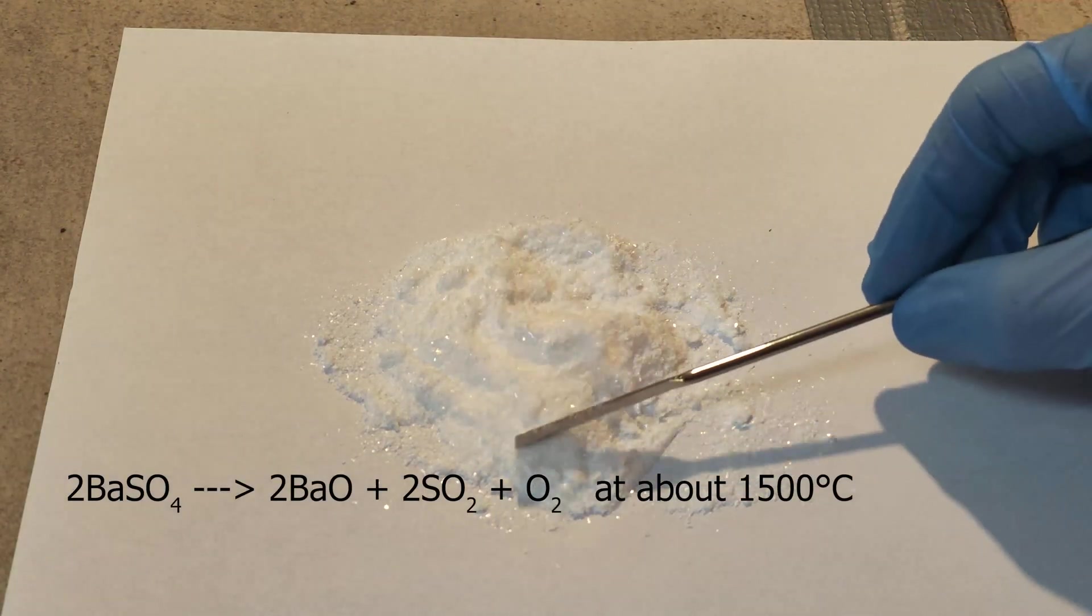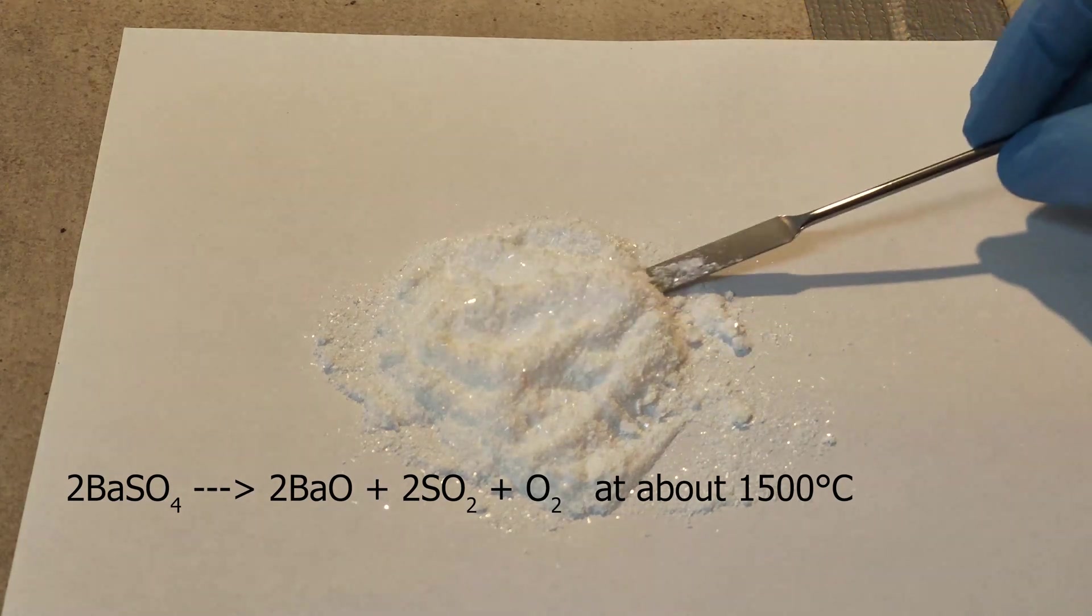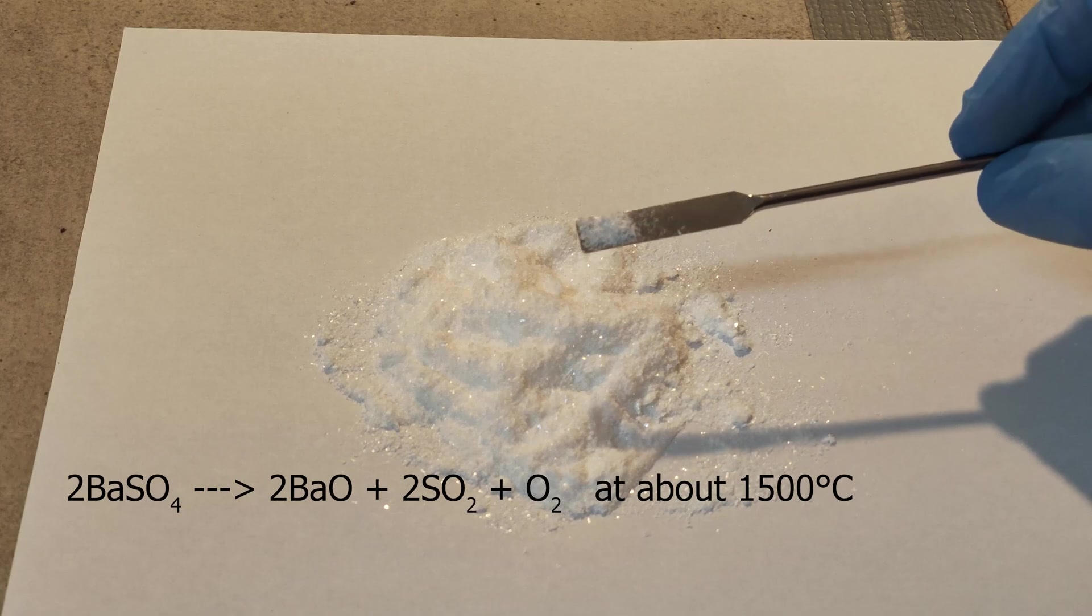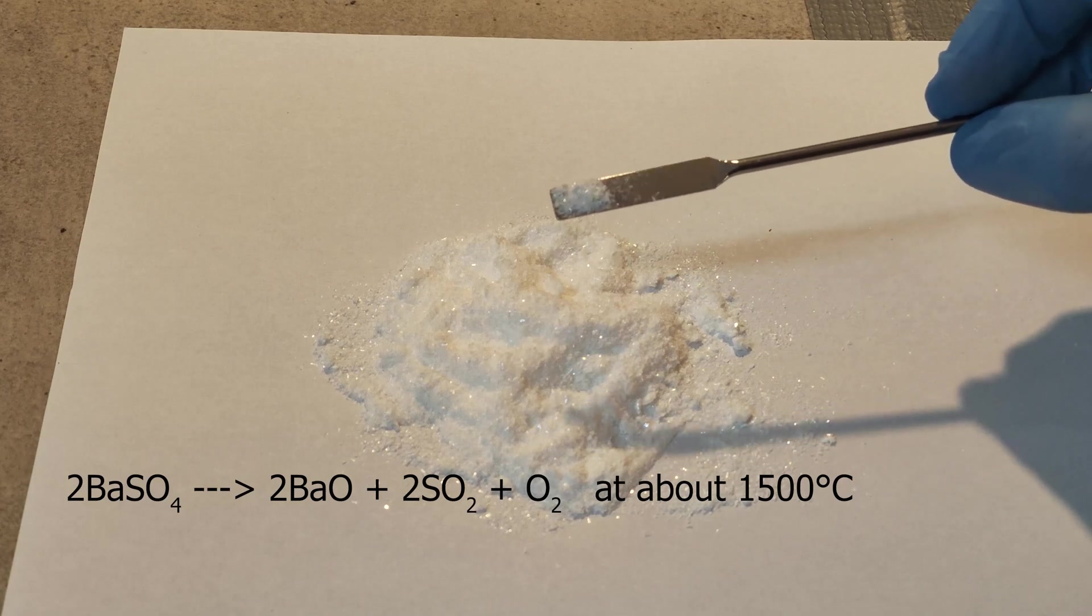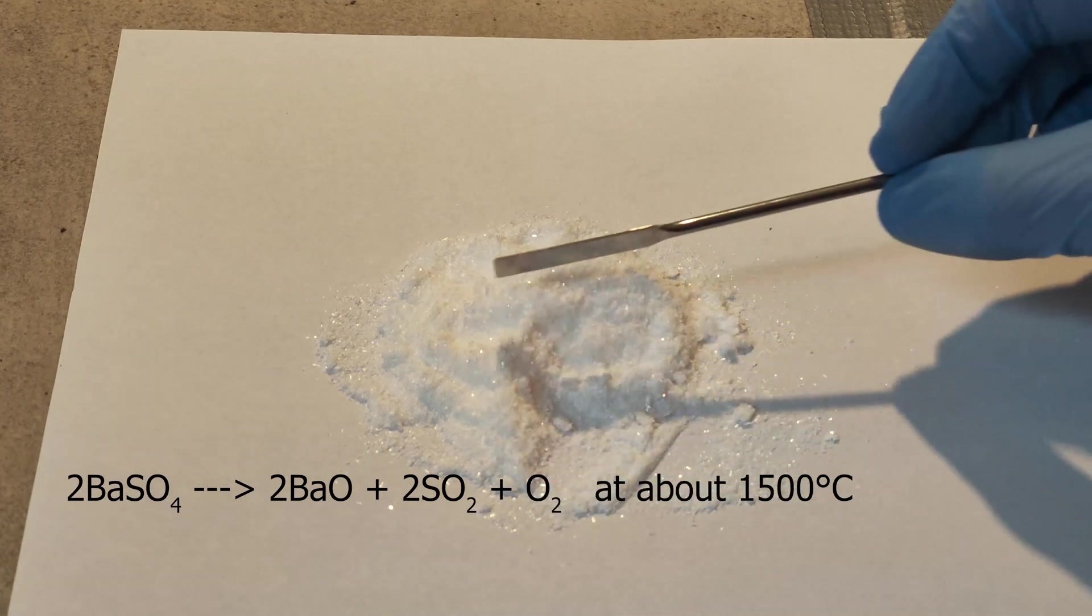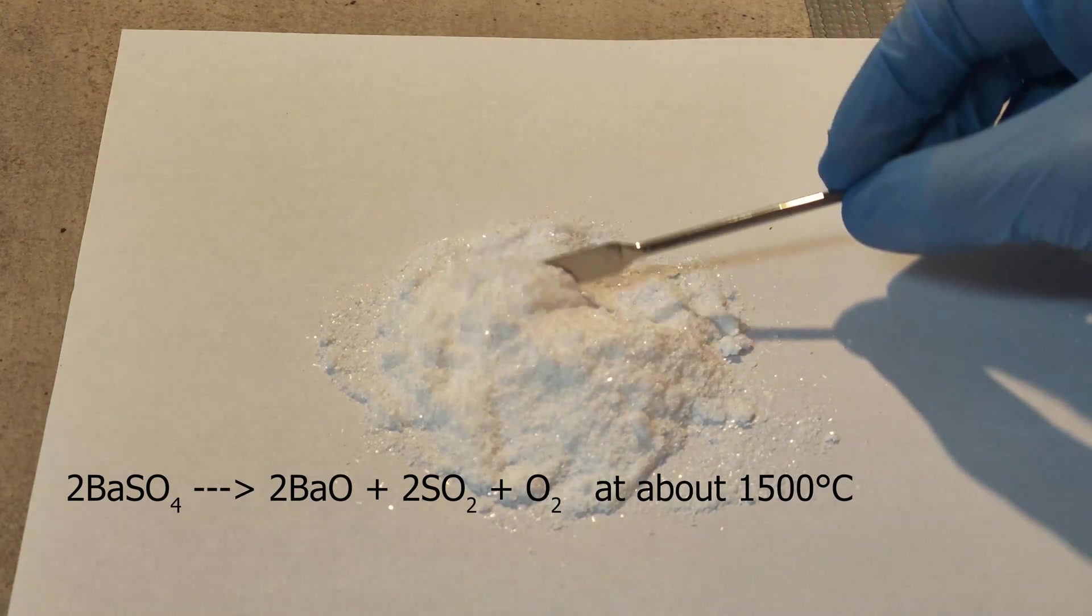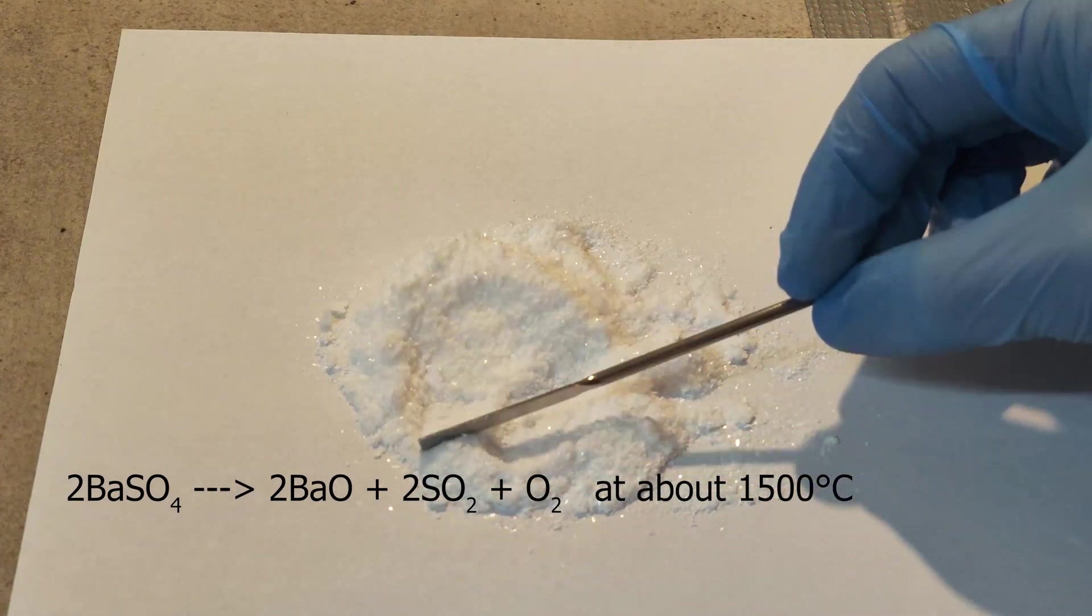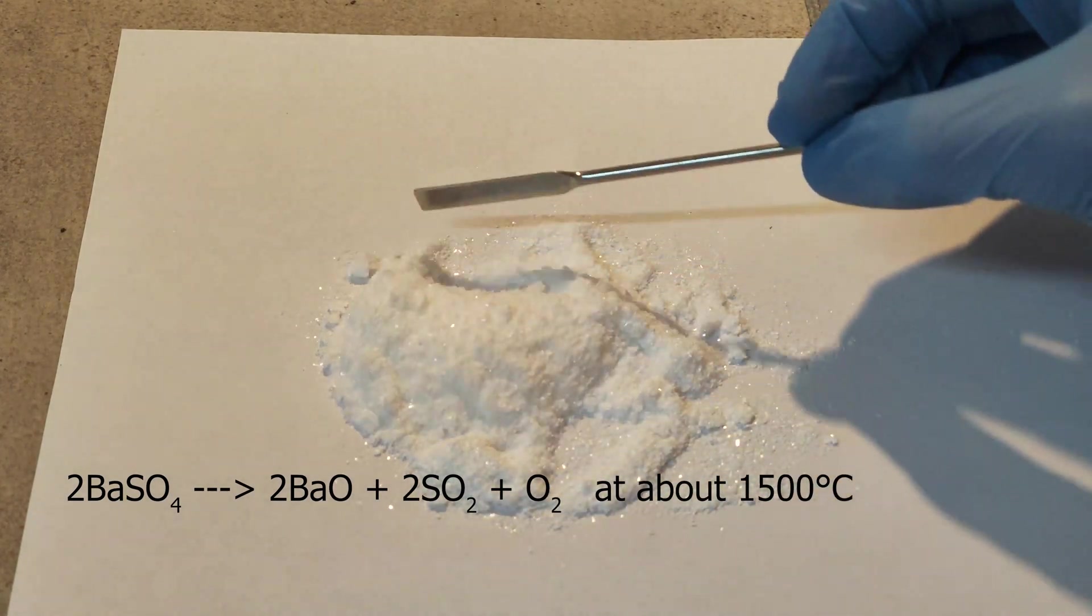There are two reactions we can do with the sulfate that yield a soluble salt. First, by just heating to about 1500 degrees, it will give off sulfur dioxide and leave behind barium oxide. But these temperatures are not easy to achieve in the amateur lab, especially finding a reaction vessel that can withstand these temperatures would be difficult.